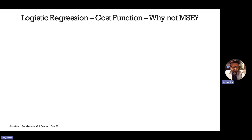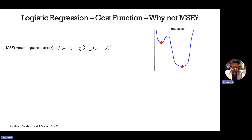Now let's see how the cost function works for logistic regression. We do not use MSE — mean squared error. The problem is that if we plot MSE for logistic regression with the linear part followed by the activation function, it turns out to be a non-convex function. We do not have a unique global minima; there can also be local minima. If we use this cost function, gradient descent may get stuck at a local minimum and never reach the global minimum.